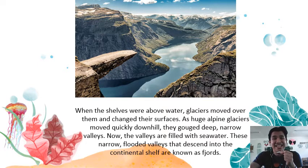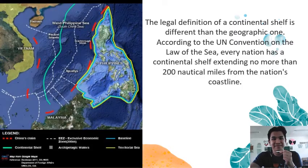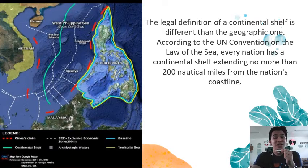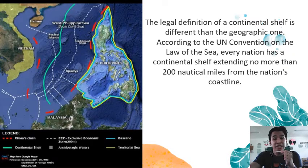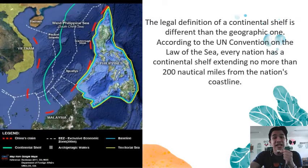In the picture, that is an example of a fjord found in Norway. The legal definition of a continental shelf is different from the geographic one. According to the United Nations Convention on the Law of the Sea, every nation has a continental shelf extending no more than 200 nautical miles from its coastline. For example, in the Philippines, we also have the exclusive economic zone which extends 200 nautical miles, and part of it includes the Spratly Islands, also known as the Kalayaan Group of Islands.